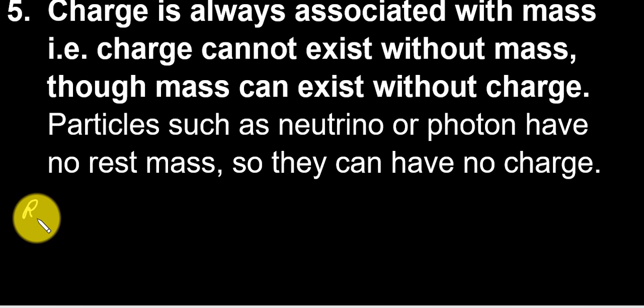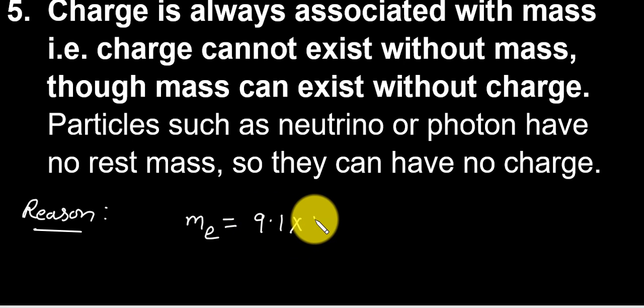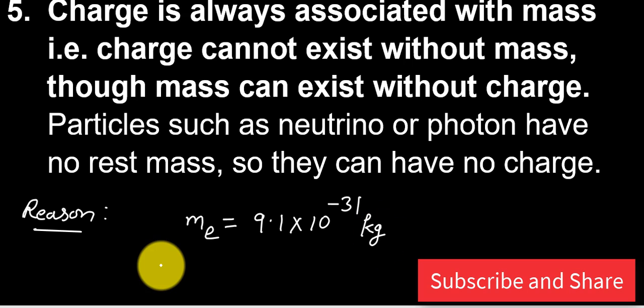The reason is as charge is produced due to transfer of electrons from one body to other. And each electron has mass 9.1 × 10^-31 kg approximately. Therefore, the transfer of electrons means transfer of mass.